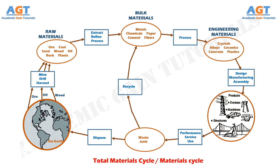Materials moving through this cycle may be considered as an investment of energy, because the energy expended to extract a metal from ore does not need to be expended again if the metal is recycled. A pound of useable iron can be recovered from scrap at about 20% of the energy cost required for extracting a pound of iron from ore. Similarly, copper can be recycled at only about 5% of the cost needed to extract copper from ore, and recycling of magnesium only requires 1.5% of the cost required to extract it from ore.